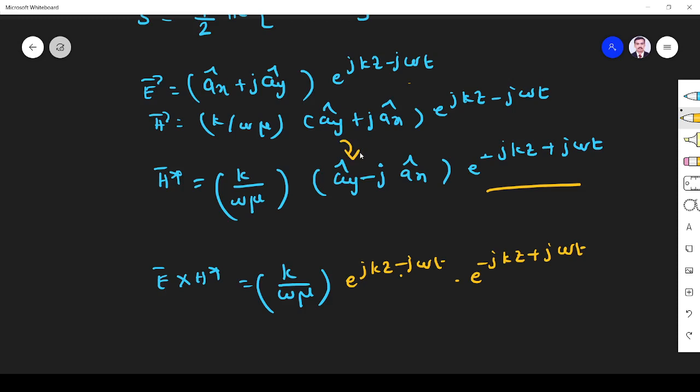Now I multiply vector, ay cross ay is 0, ay cross, sorry this is not ay. I have to multiply these two E and H. ax cross ay it is az, ax cross ax is 0, ay cross ay is 0.